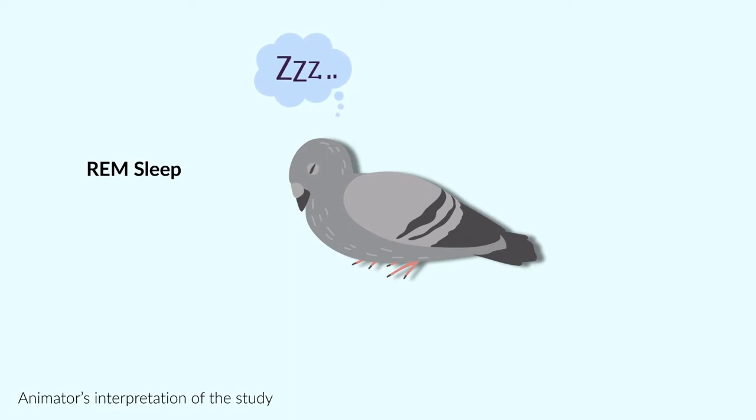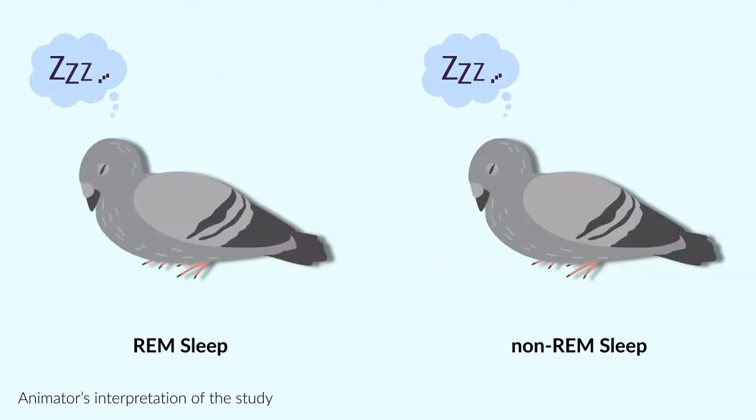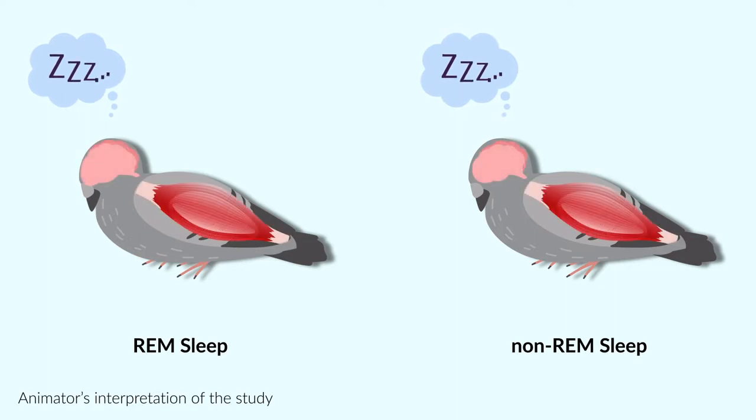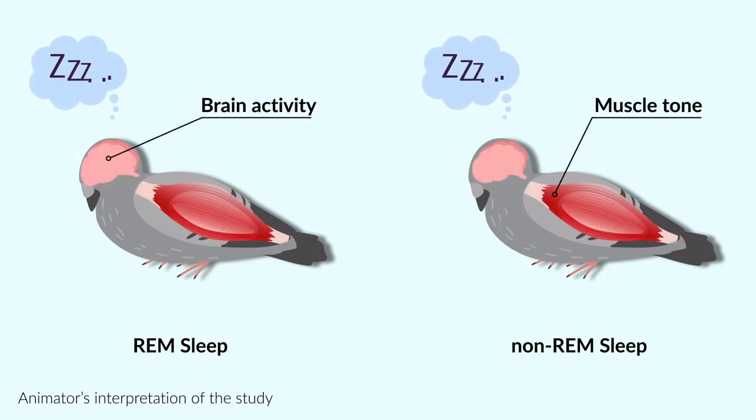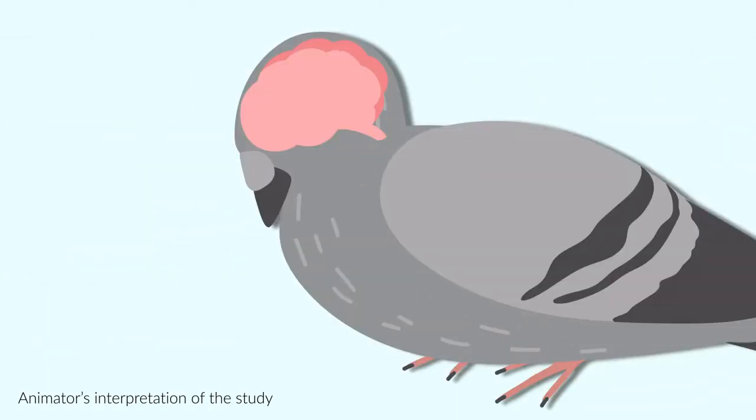Rapid eye movement sleep, or REM sleep, and non-REM sleep. We can distinguish between these different types of sleep by looking at patterns of brain activity and muscle tone. We can also use brain activity to tell how intensely a bird is sleeping.